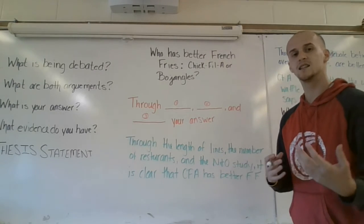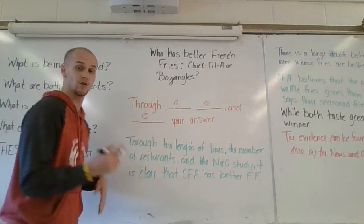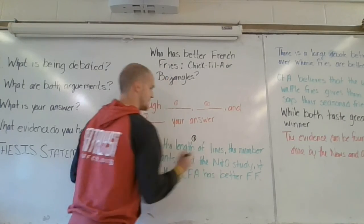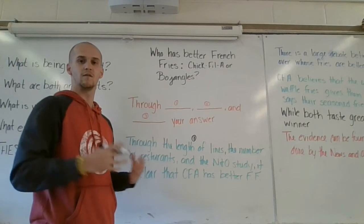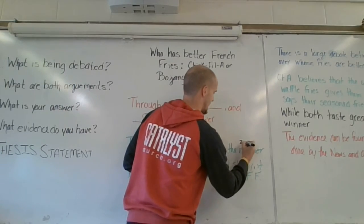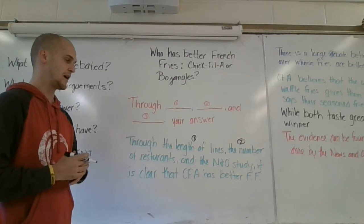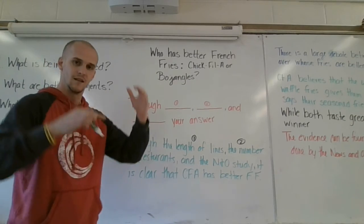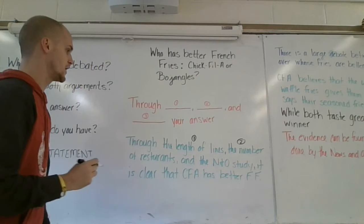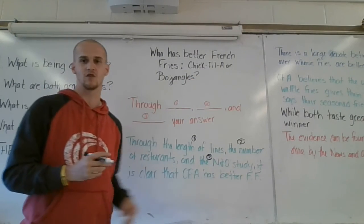This thesis statement helps you think through the rest of your paper. Your first body paragraph is going to be about the length of lines at each restaurant. Your second body paragraph is going to be about the number of restaurants each one has. Your third body paragraph — the last argument you make and your best argument — is the News and Observer study. Now you know what your three body paragraphs are going to be.